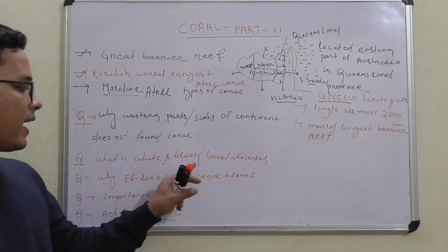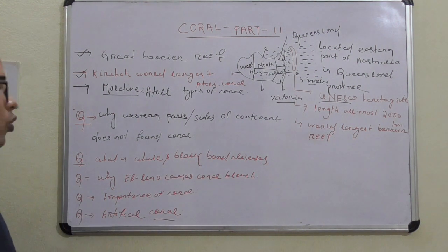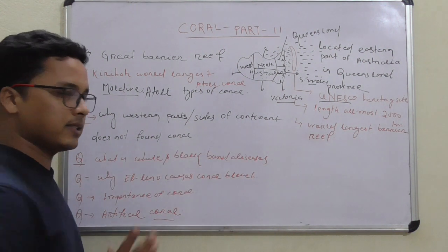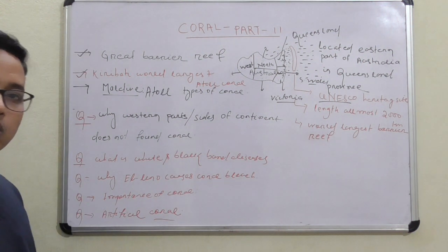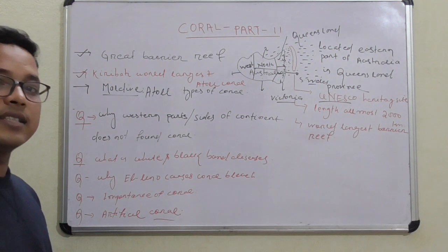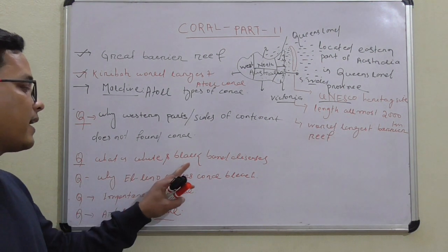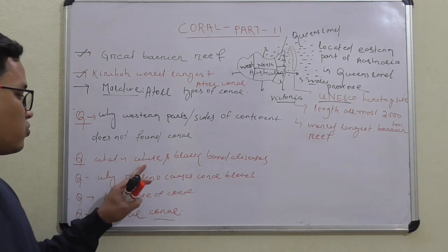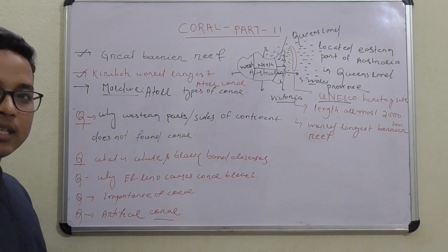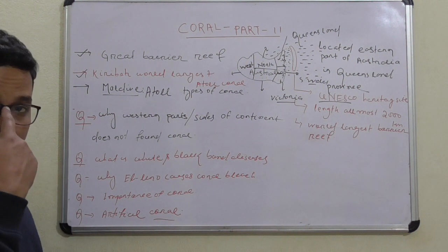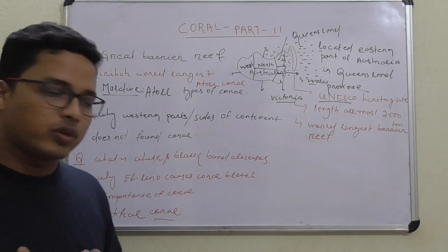Next question: what are white band and black band diseases? These are coral diseases — diseases which cause harm to corals. Corals also experience disease. White band and black band are the names of those diseases.